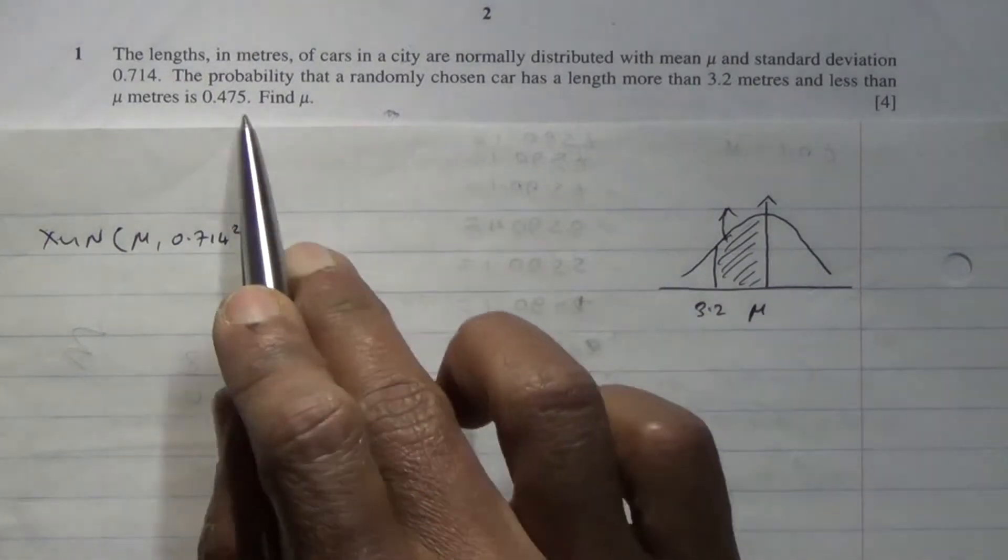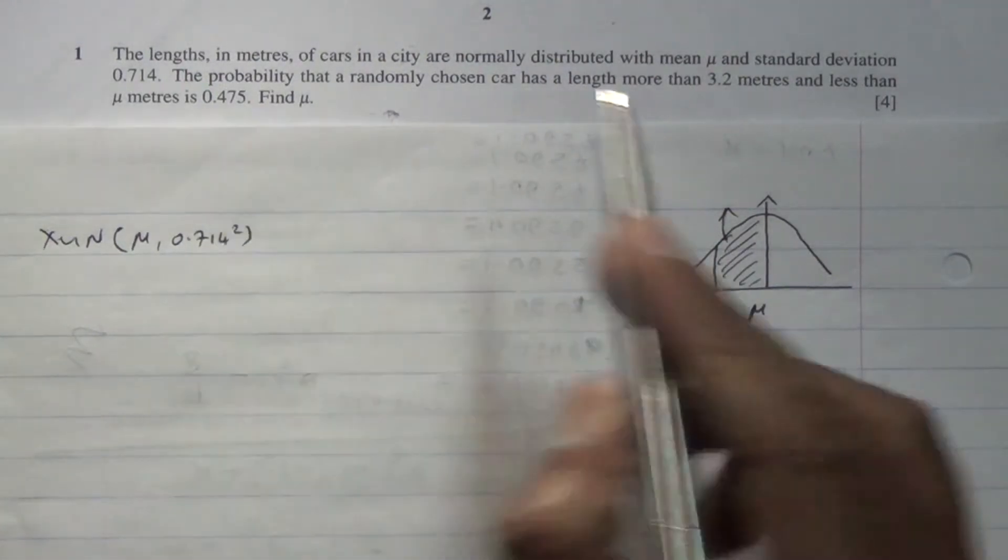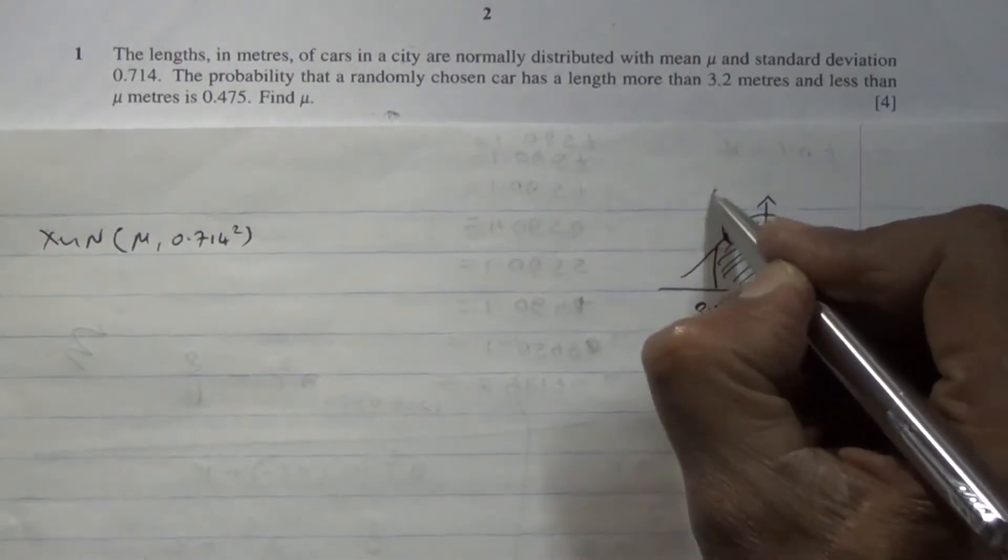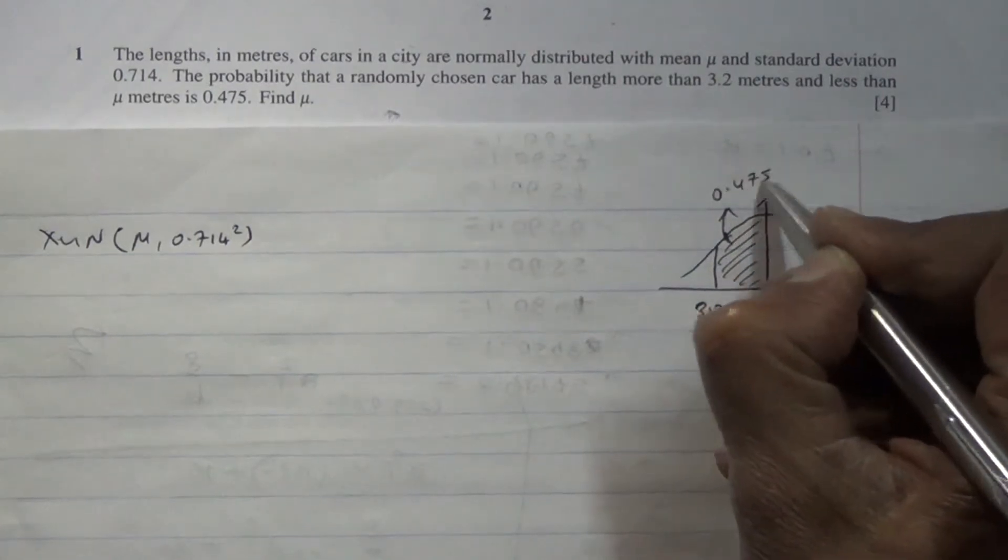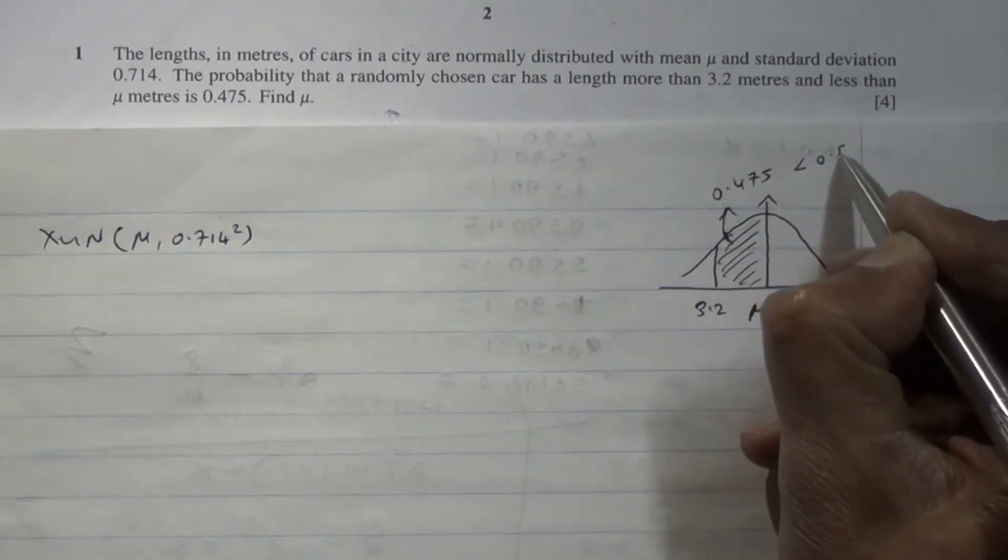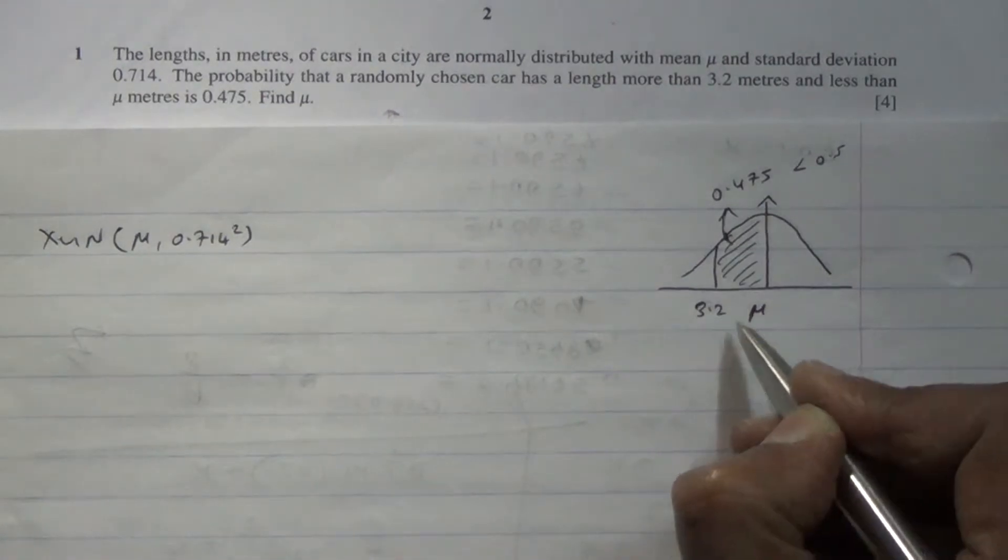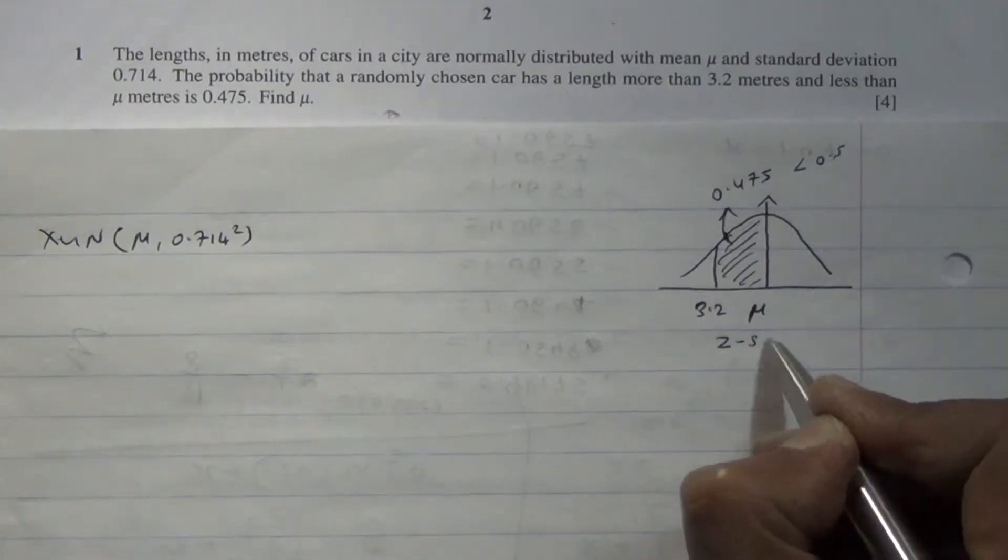And because this is going to be 0.475, the area to the left here is 0.475. Basically this is less than 0.5, therefore we're looking at a negative z-score.